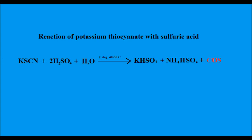In this reaction, potassium bisulfate and ammonium bisulfate are produced along with the carbonyl sulfide gas. Also, the optimum temperature for this reaction to take place is between 40 and 50 degrees Celsius.